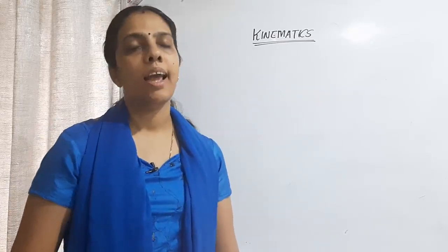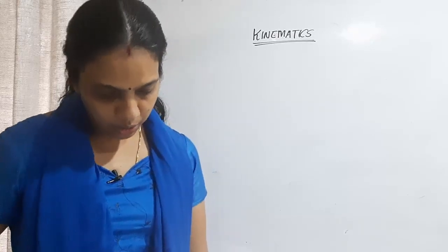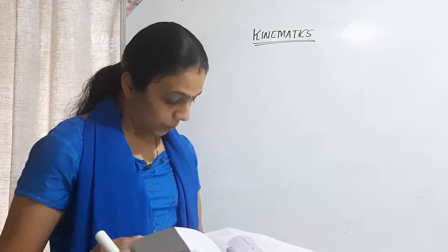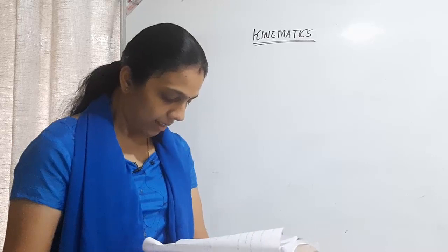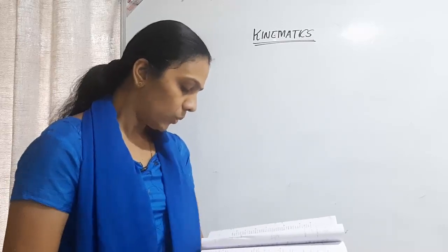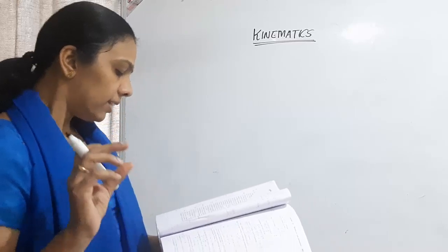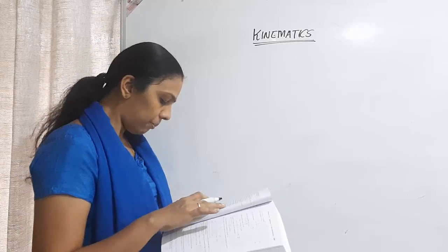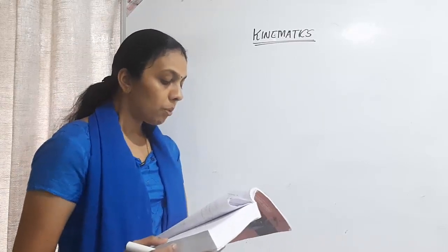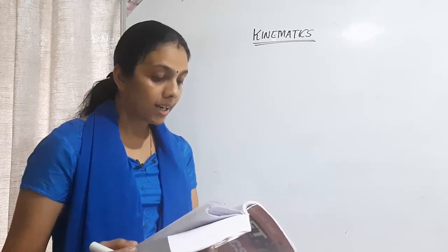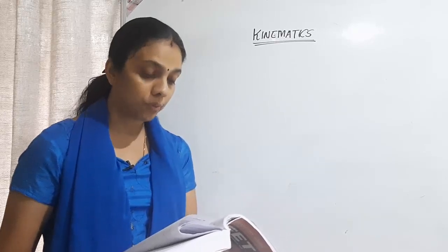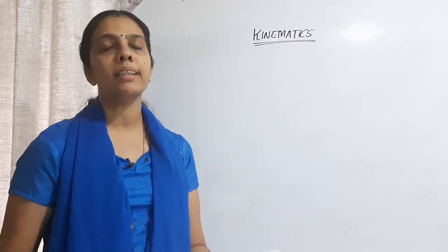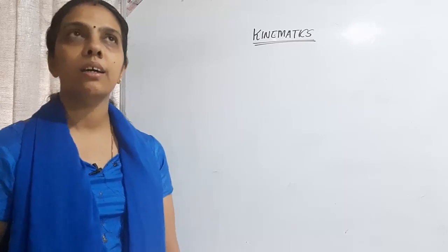The next question: two boys are standing at the ends A and B of a ground where AB equals a. The boy at B starts running in a direction perpendicular to AB with velocity v₁. The boy at A starts running simultaneously with velocity v and catches the other boy in time t. We need to find the time t.